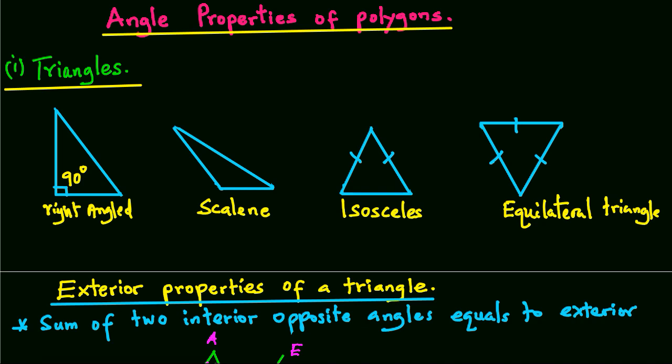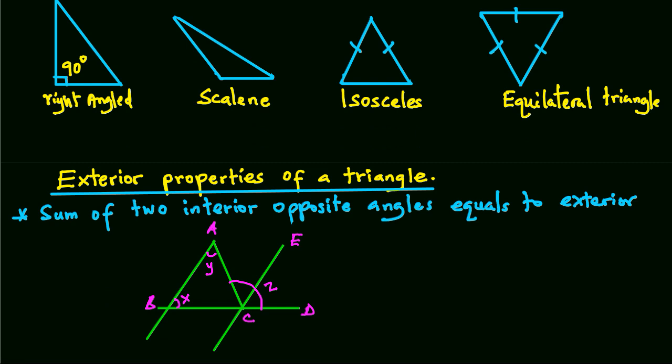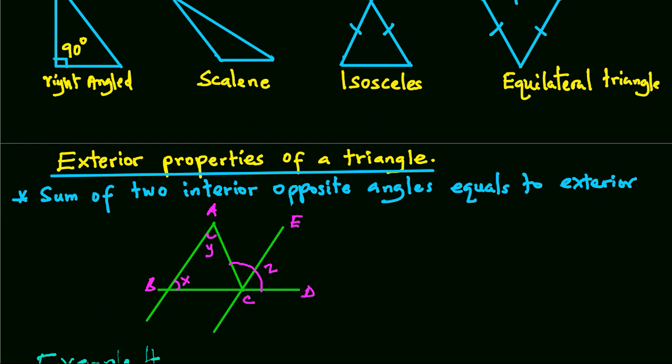Now let's look at exterior properties of a triangle. Consider this diagram. Angle ECD equals X degrees—corresponding angles are equal. Angle ACE equals Y—alternate angles are equal.